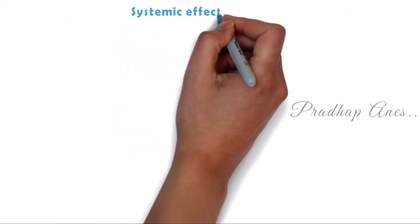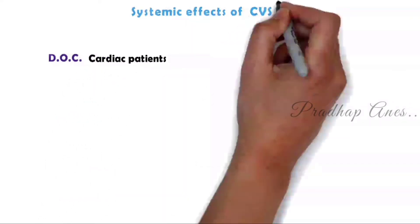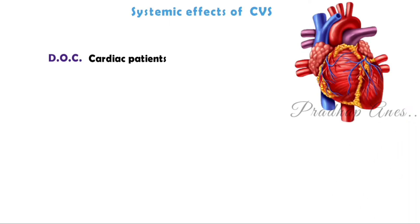Systemic Effects — Cardiovascular System: There is no histamine release, so Vecuronium is cardiovascular stable. This makes it the drug of choice for cardiac patients.